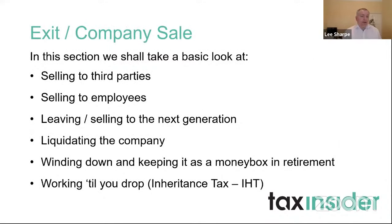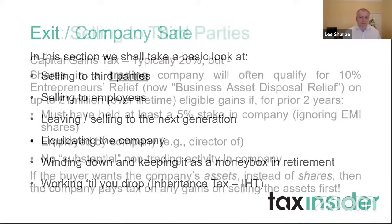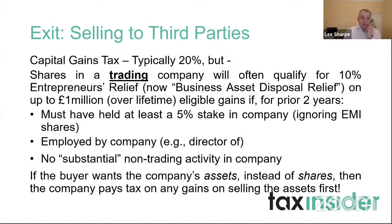Now we'll look at exit and company sale. We'll cover selling to third parties, selling to employees, leaving the company to the next generation, liquidating or winding down the company, keeping it as a money box in retirement, or working until you drop — which has more of an inheritance tax emphasis. Selling to third parties: you're subject to CGT typically at 20%, but shares in a trading company will often qualify for 10% entrepreneurs' relief — and I insist on calling it entrepreneurs' relief, not business asset disposal relief.